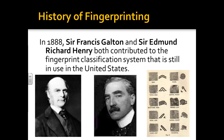Our next two scientists we're going to talk about are Galton and Henry. Both of these gentlemen contributed to the fingerprint classification system that we still use today in the U.S. and all over the world. They came up with a lot of the different patterns that we deal with when trying to differentiate between people. Tomorrow we will be doing an activity dealing with identifying these things. So Galton and Henry helped come up with the system we use today for fingerprinting.